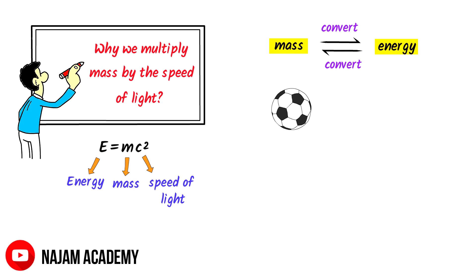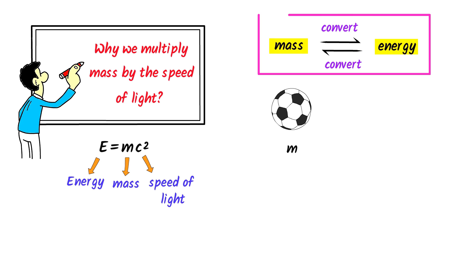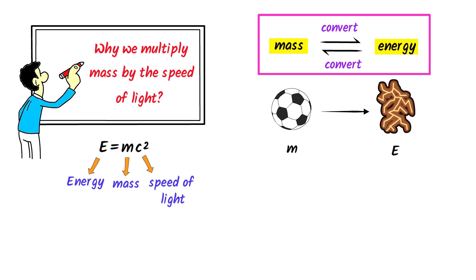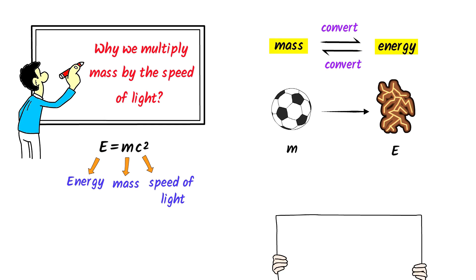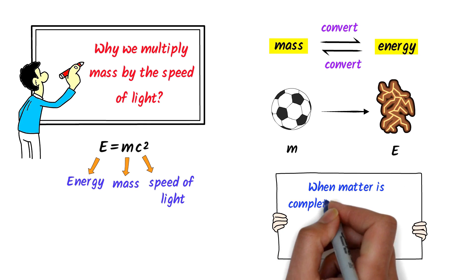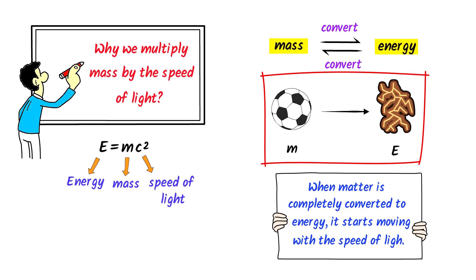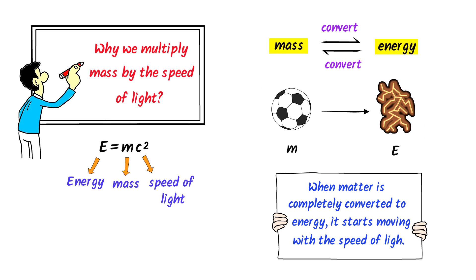Now let's consider a ball. We know that it possesses some well-known mass, m. According to this equation, consider that we completely convert this ball into energy and no mass is left behind. When matter is completely converted into energy, it starts moving with the speed of light. We have converted this ball completely into energy, and it is now moving with the speed of light, which is represented by c.